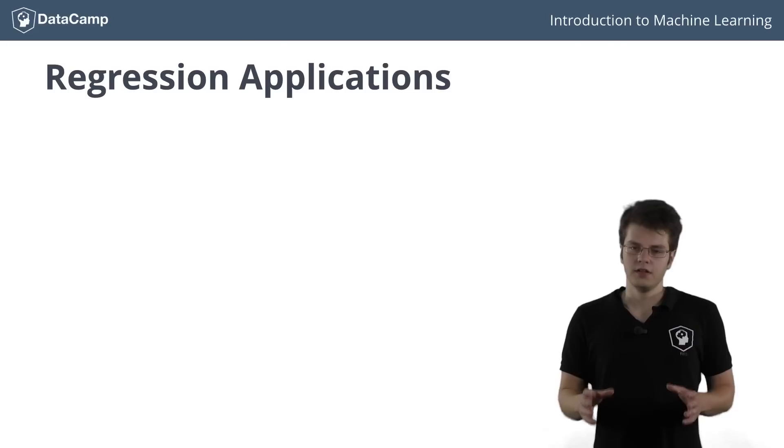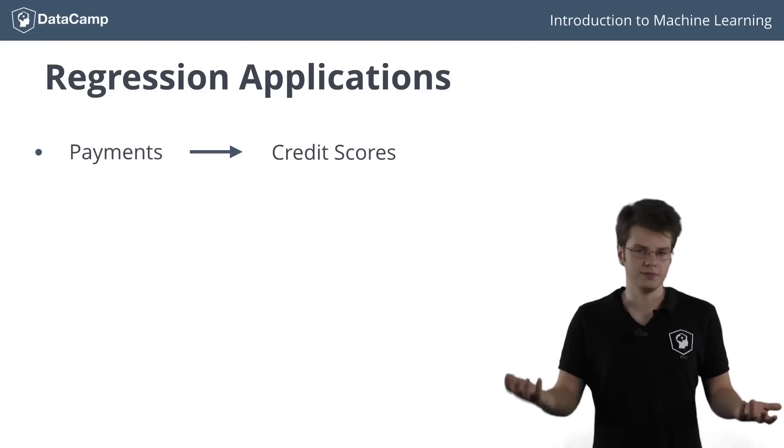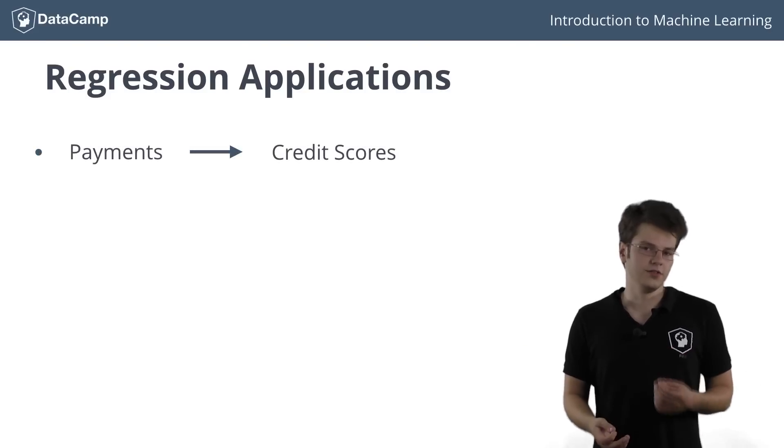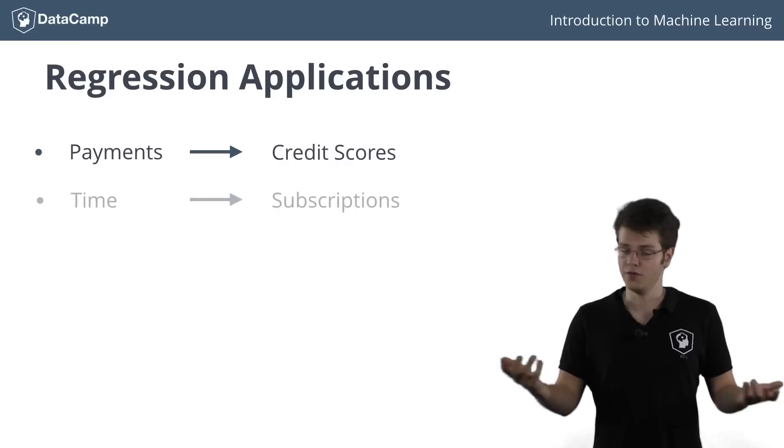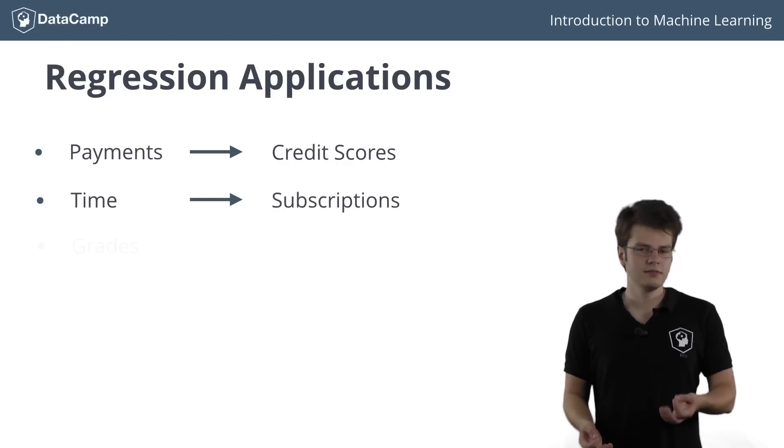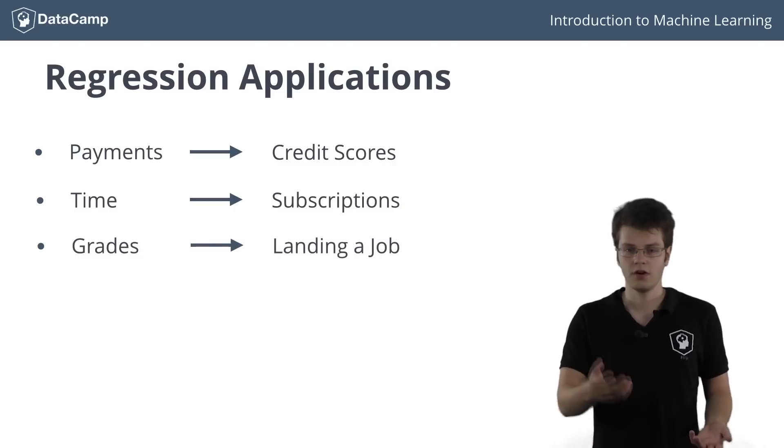Now, I hear you asking, what can regression be useful for apart from some silly weight and height problems? Well, there are many different applications of regression. Going from modeling credit scores based on past payments, finding the trend in your YouTube subscriptions over time, or even estimating your chances of landing a job at your favorite company based on your college grades.